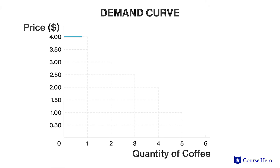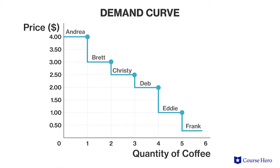The area of a rectangle is its base multiplied by its height. Suppose we map out the demand for coffee for six individuals who are all willing to pay different amounts for a cup of coffee, ranging from $4 to 25 cents. If the price of a cup of coffee is $2, we can calculate each individual's consumer surplus and then add them up to calculate the total consumer surplus.